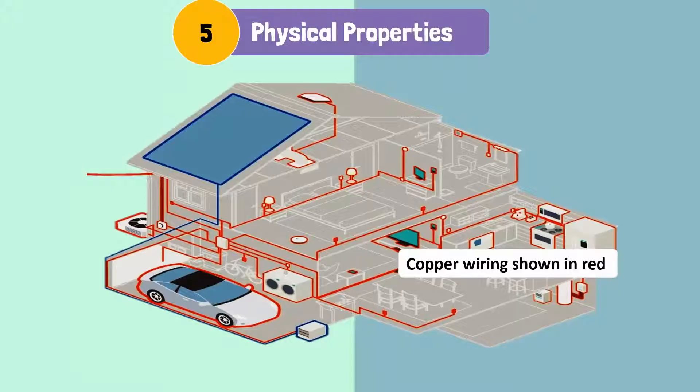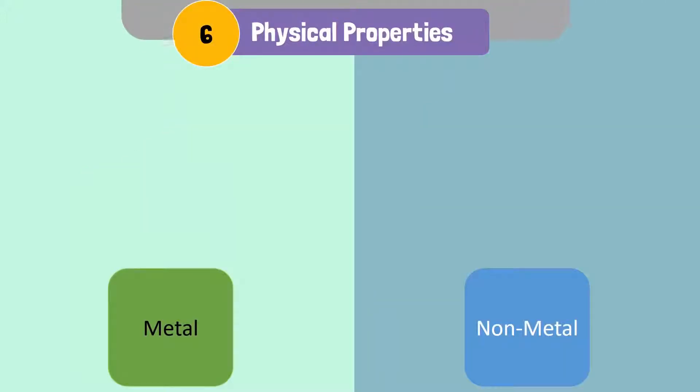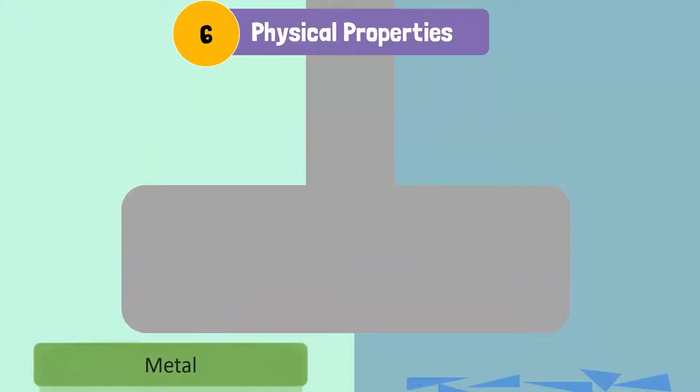The reason copper is used and not other metals like gold and silver is because that would be too expensive. Can you imagine? Gold wires all over your house! Another reason metals are used for wires is because they are ductile.